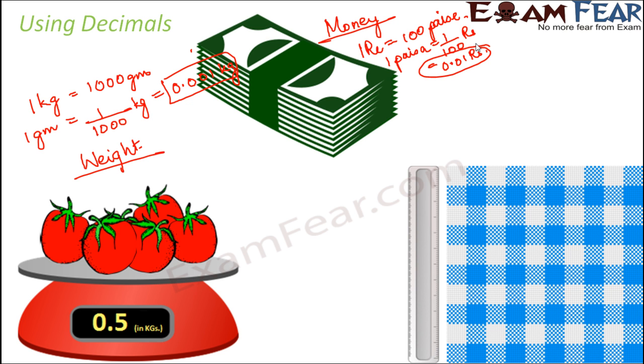And the third sector where we use decimals very often is length. So whenever we have to measure the length of anything, let's talk about measuring length of a piece of cloth. What are the units that we generally use? Meters, centimeters. So there also, if you look at their relationship, 1 meter is equal to 100 centimeters. So 1 centimeter is equal to 1 out of 100 meters, that is 0.01 meters.